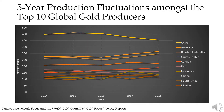Here we see a temporal graph examining the five-year production fluctuations amongst the top 10 global gold producers. As you can see, China is consistently the largest producer in the world.